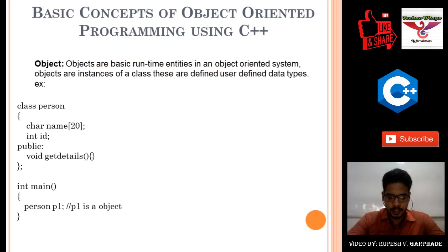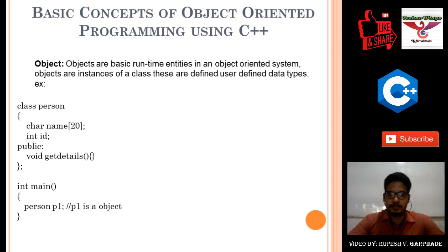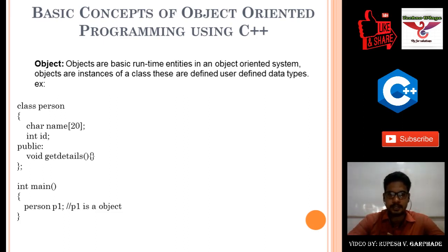After entering object oriented programming, there are some properties called the principles of OOP. These principles include: object, classes, encapsulation, abstraction, polymorphism, and inheritance.